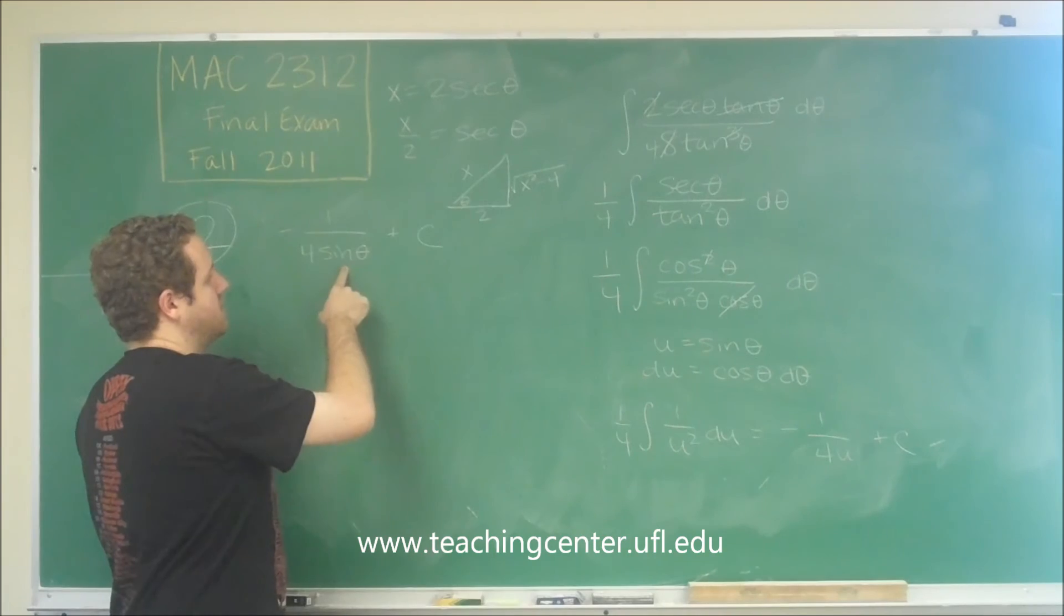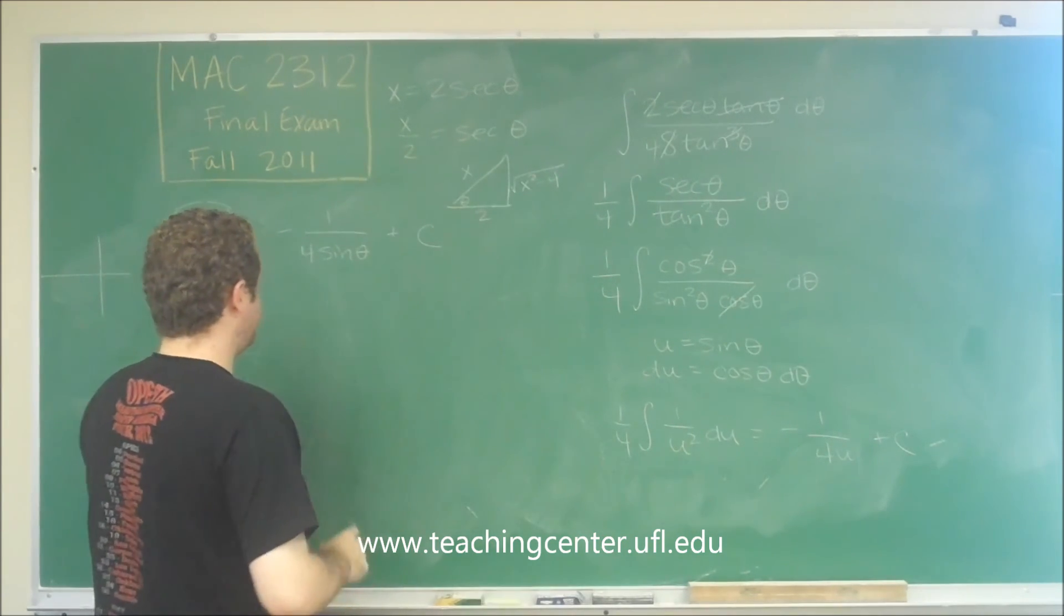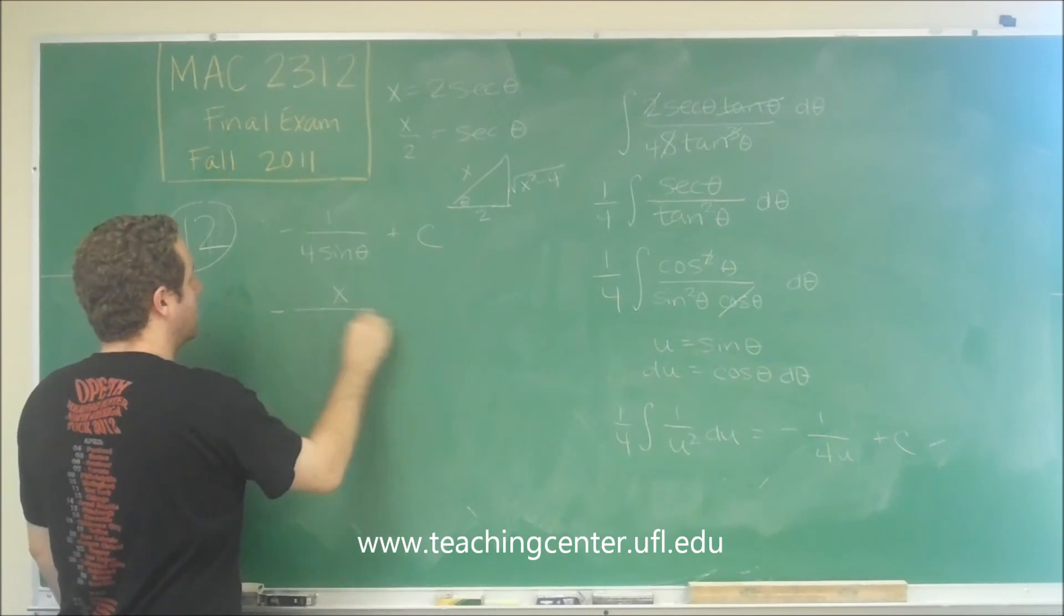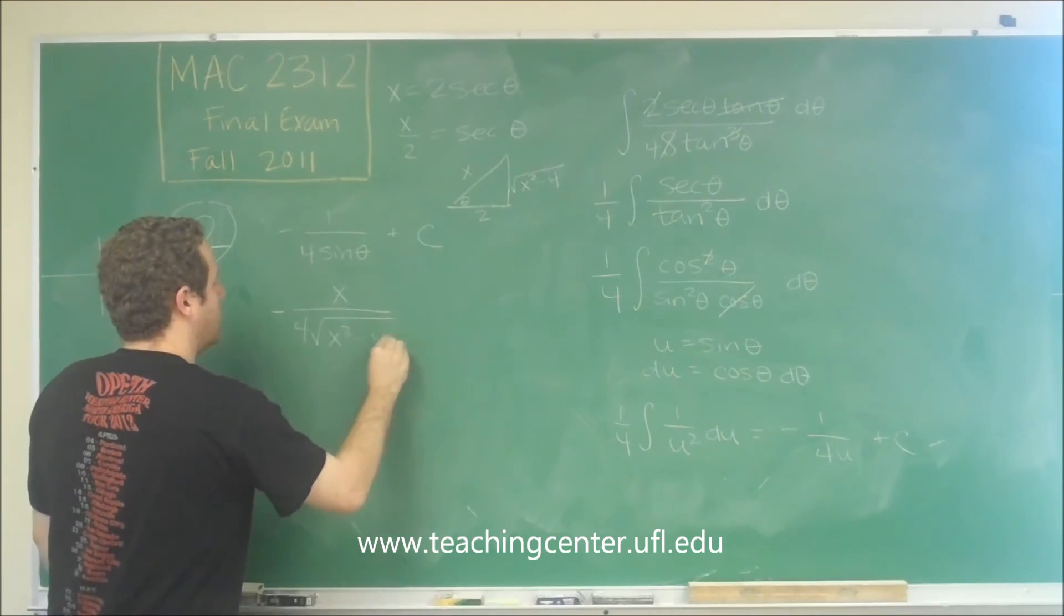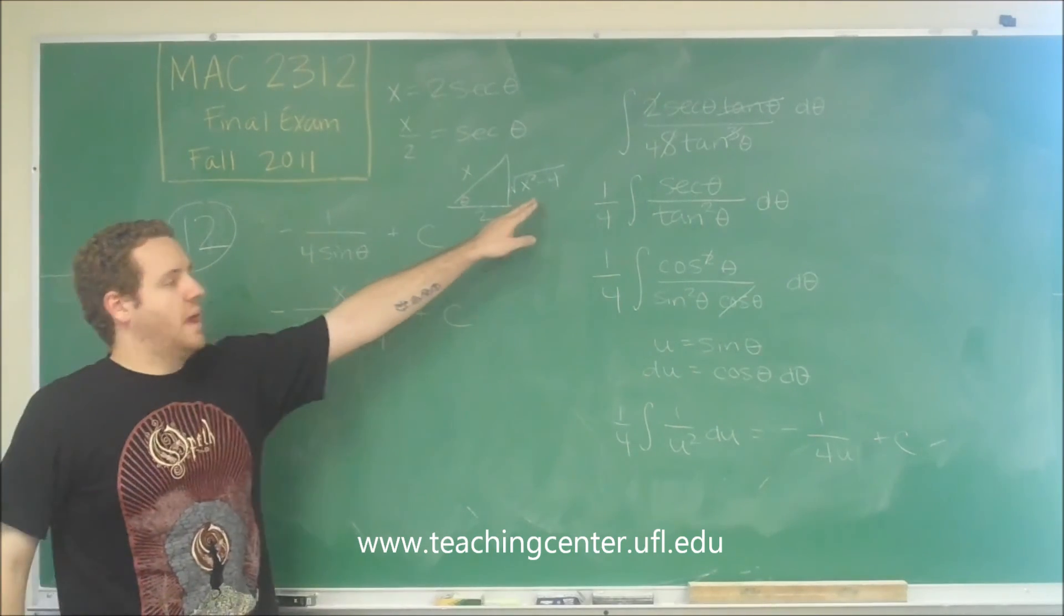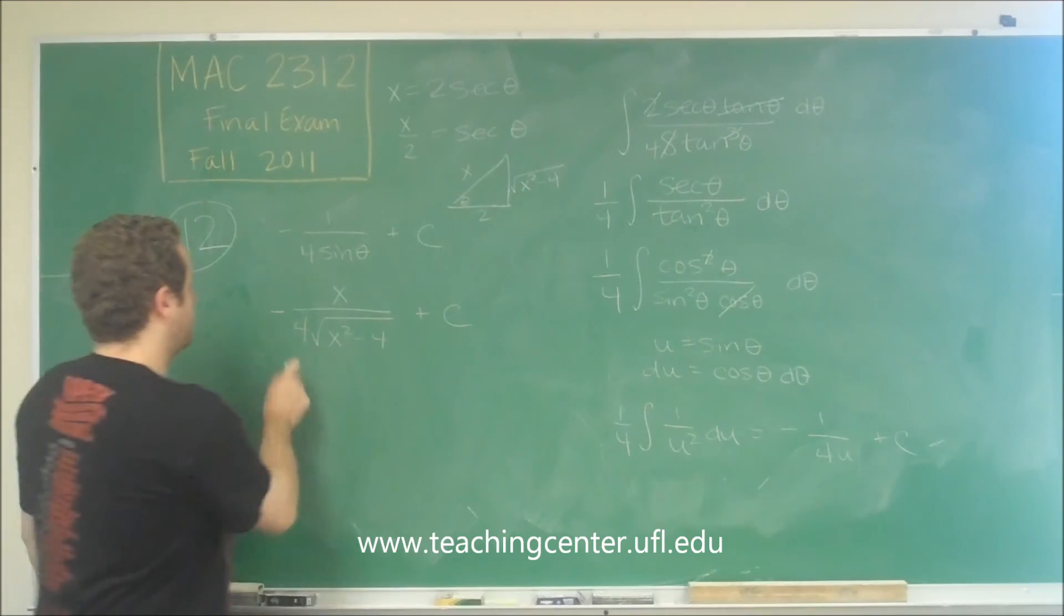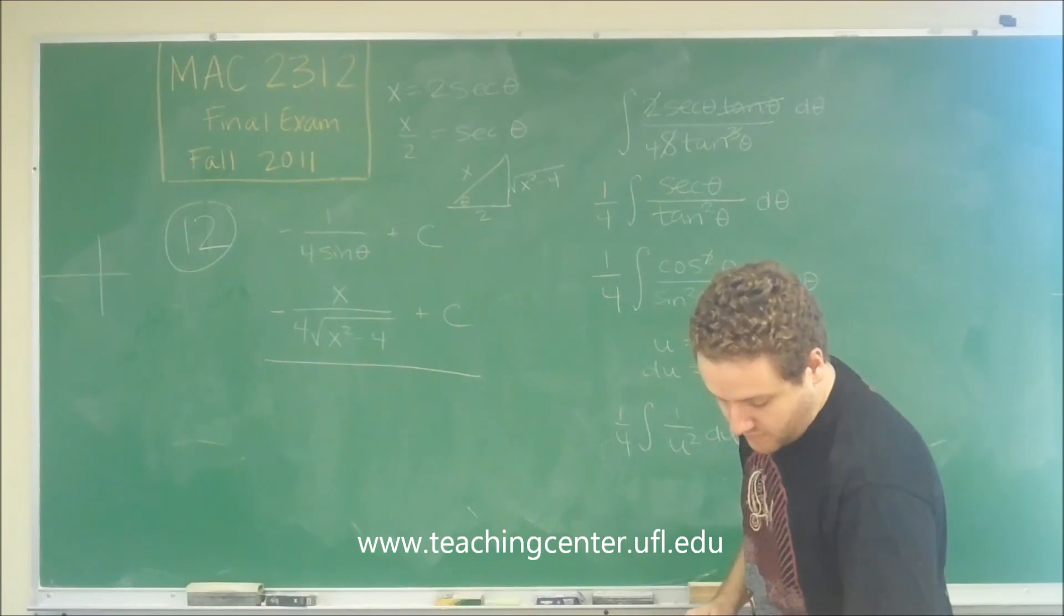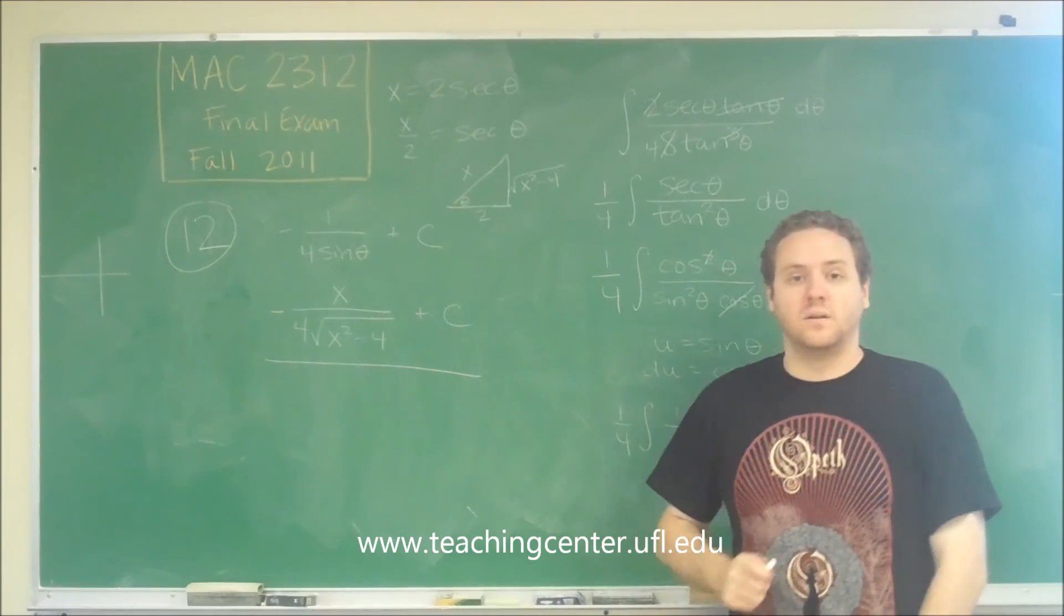We need sine of theta. So sine of theta would be opposite over hypotenuse. Since this is on the denominator though, that x would actually go to the numerator. So you can see there, sine theta is root x squared minus 4 over x. But since it's on the denominator, we have the reciprocal of that. And then we have that right there as our answer. And that matches up with answer choice B on the test.